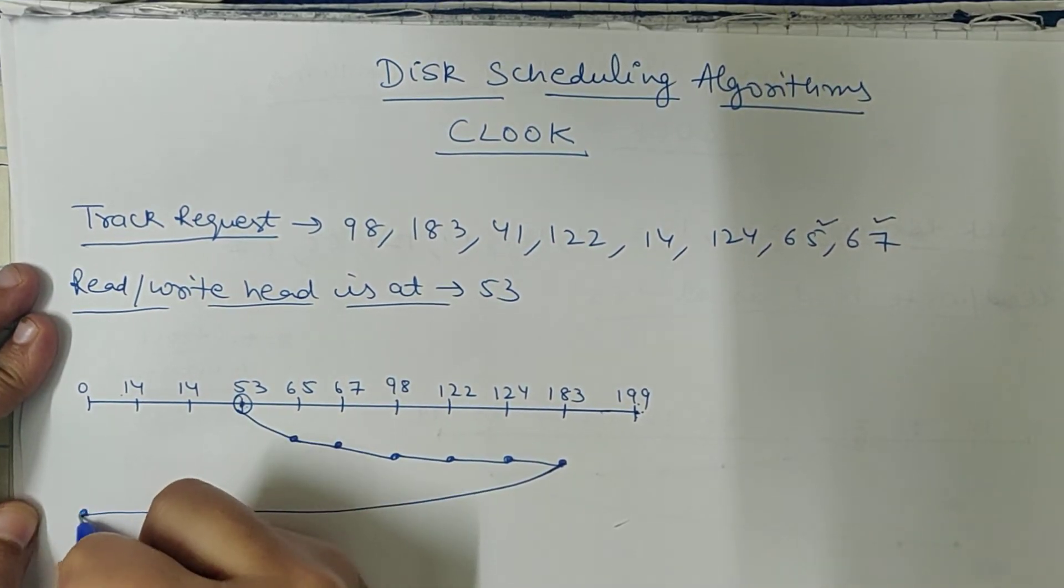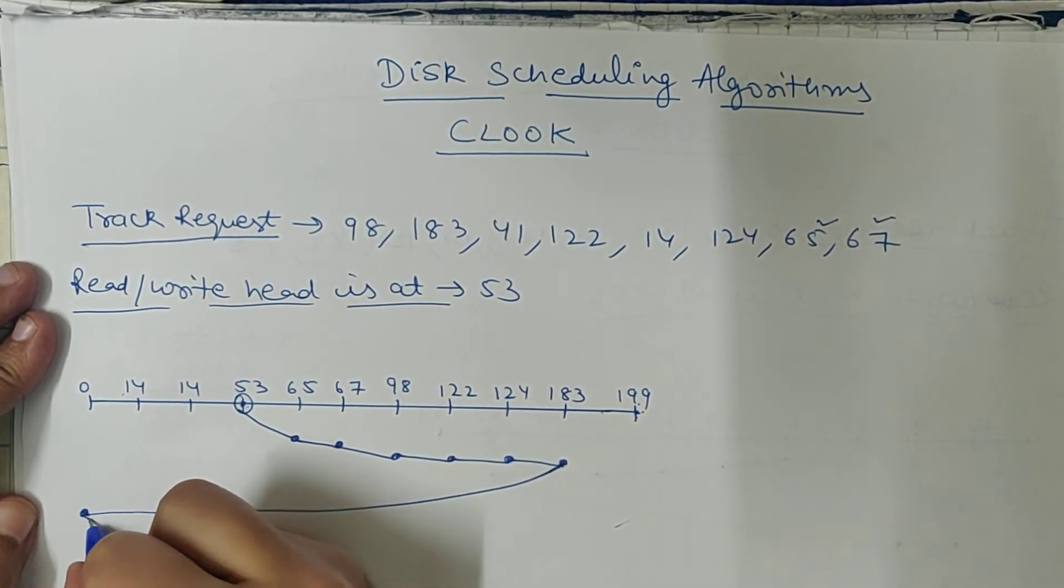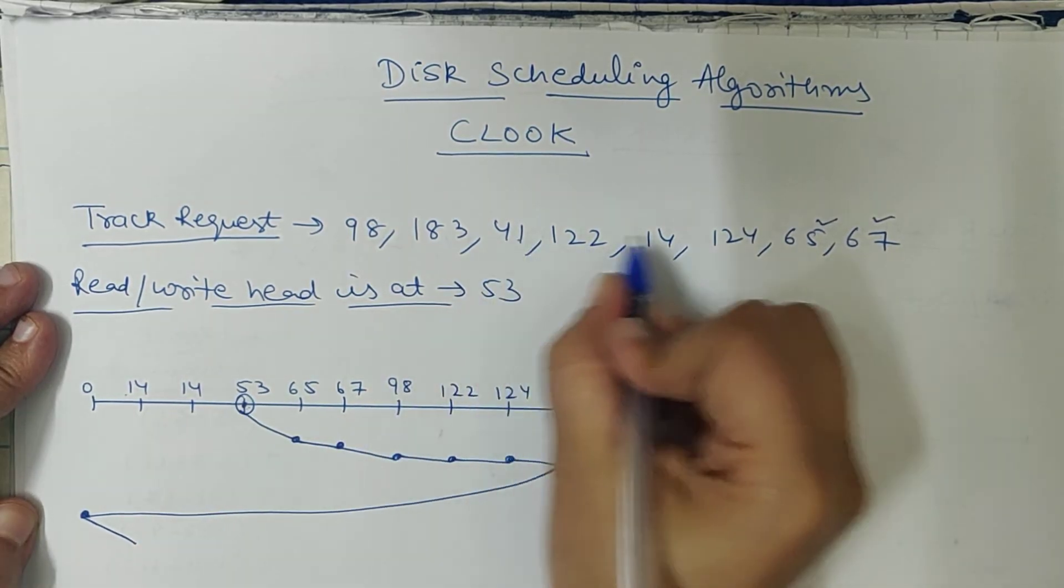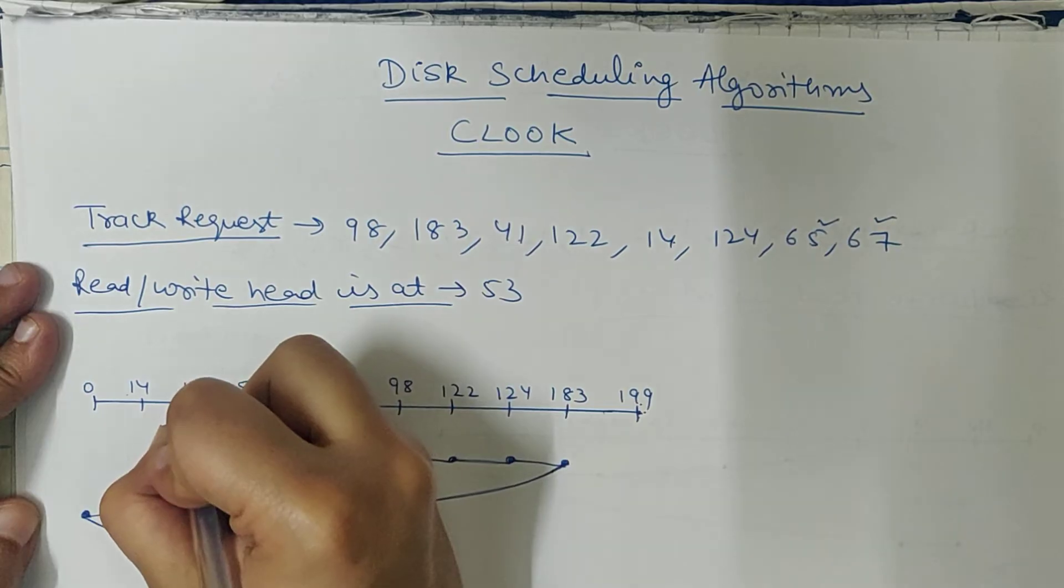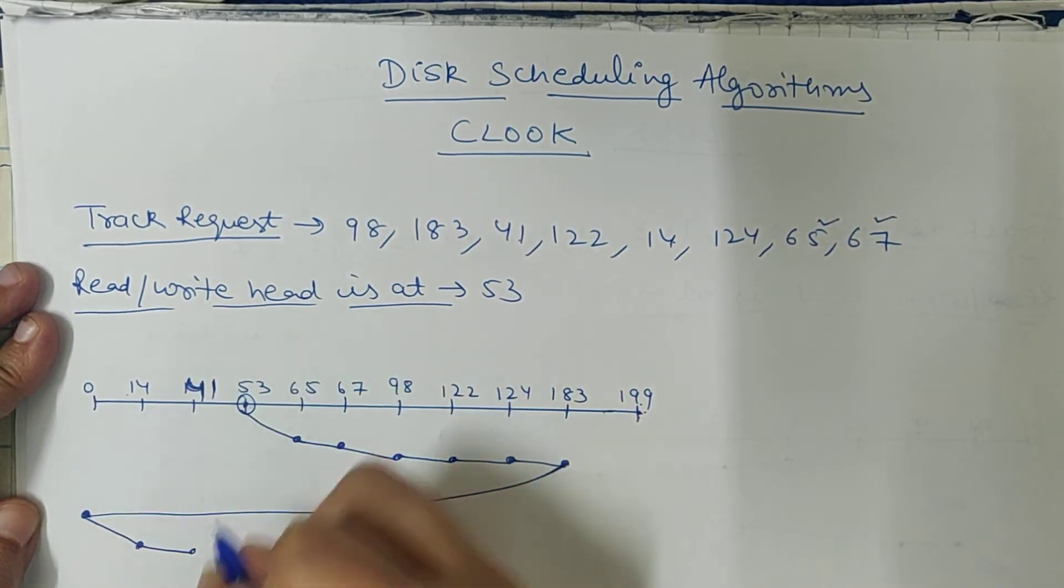We will go to zero. After going to zero, we will go in forward direction, and then our request is 14, and then 41. This is 41, then 41.